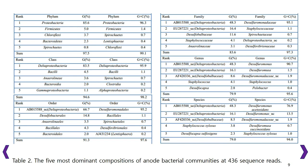Uncultured Desulfuromonas clone at 16.4%, Staphylococcus xylosus at 15.1%, Desulfomicrobium bacterium at 9.8%, Desulfuromonas autrophilus at 4.8%, and Escherichia coli at 4.6% were the 5 most dominant species in the Magnesium anode community.